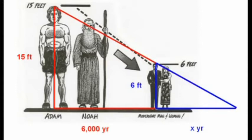We have two similar triangles, the red triangle and the blue triangle. By the properties of similar triangles, we know that the total time from Adam until human beings disappear, which is 6,000 plus X, is to 15 as X is to 6.